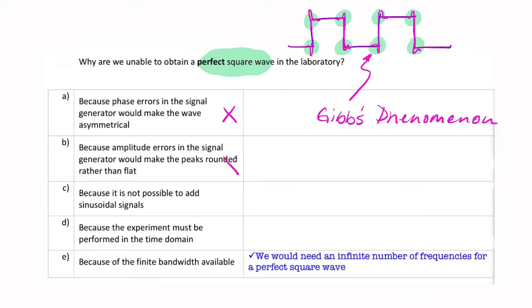We're looking for something that says we don't have an infinite bandwidth. It's not possible to add sine waves? No, it is possible. It's perfectly possible—you'll be doing that in experiment three. So that's false.